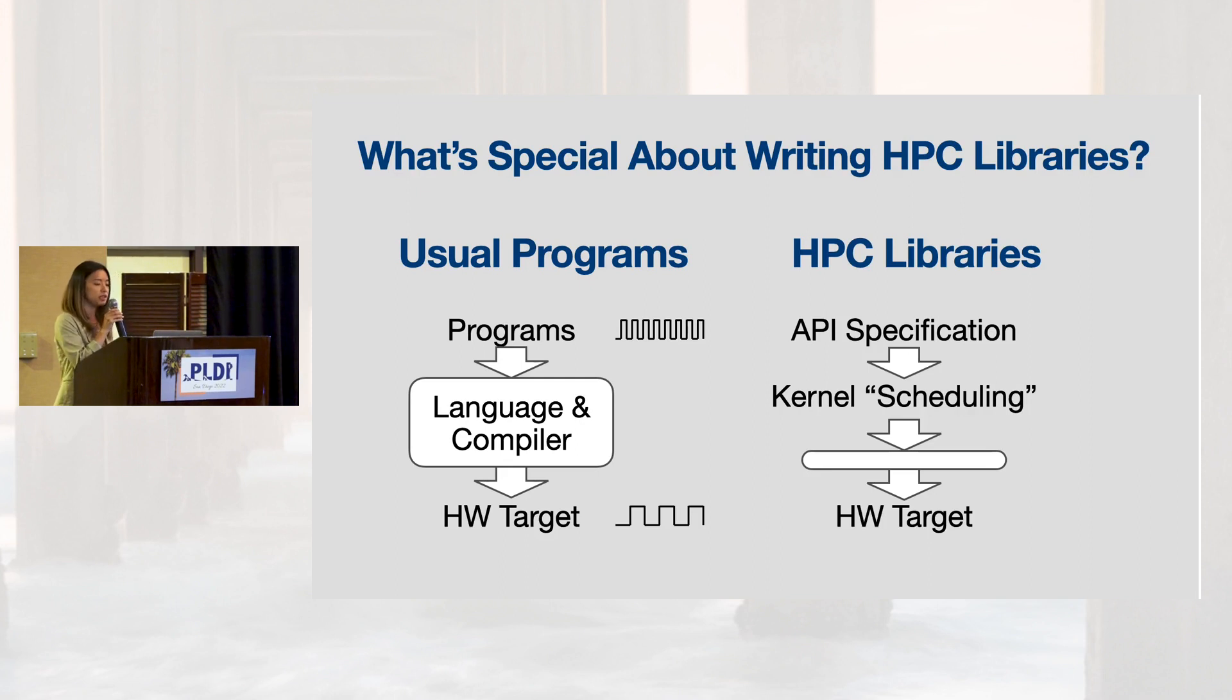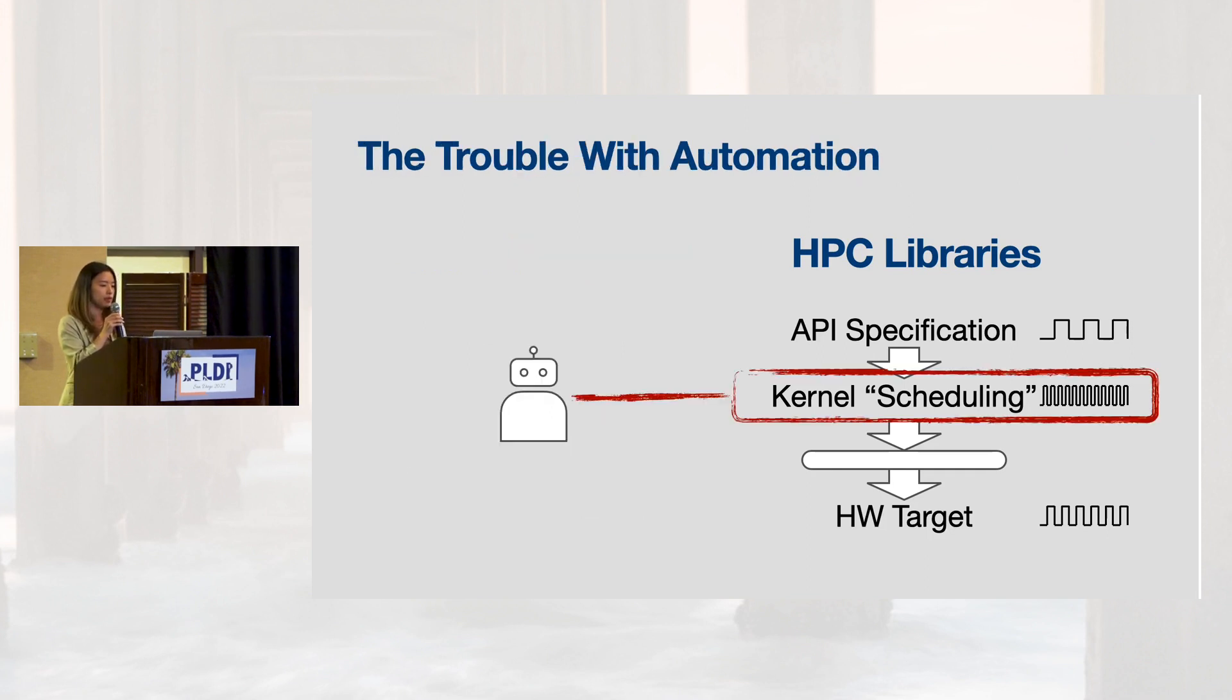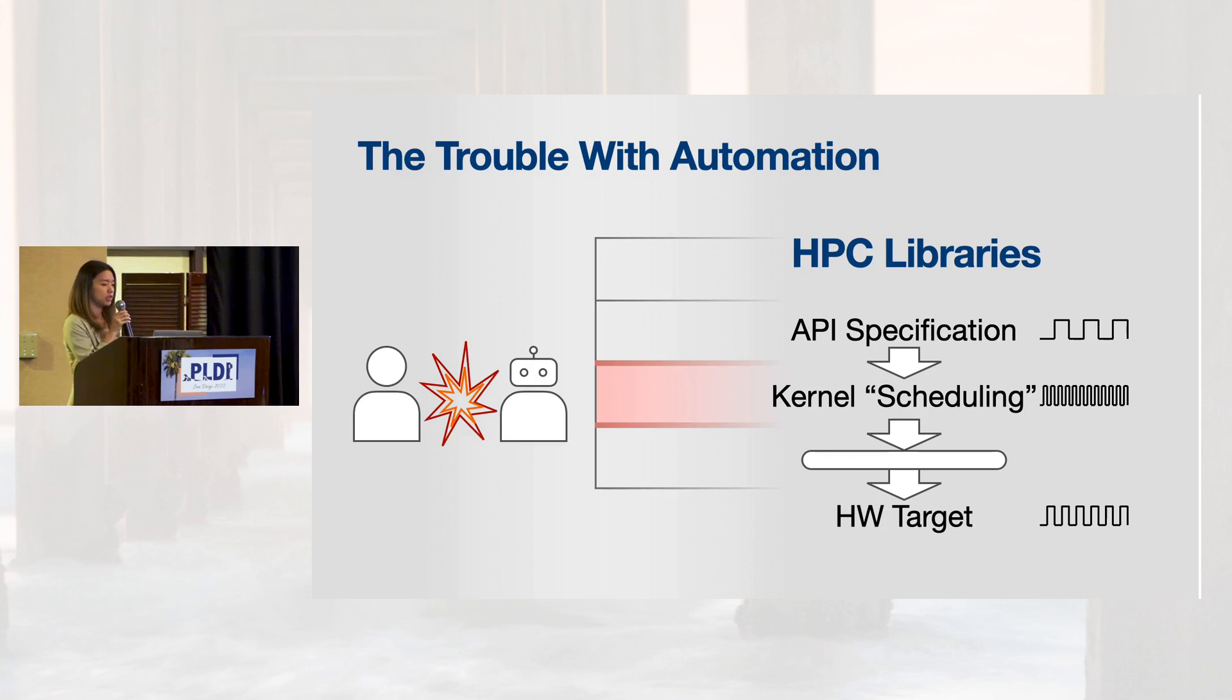The situation for HPC libraries is reversed. The specification of what programs should do, for example BLAS or convolution, changes least frequently, even as hardware keeps getting updated. And even more frequently, performance engineers must constantly experiment with different ways of computing the same thing to find optimization opportunities. The main approach in research has been to try to automate this optimization process. But full automation would prevent performance engineers from doing their job, instead delegating it to compiler writers. This is usually a losing cost-benefit proposition because even modest gains in efficiency save millions of dollars at scale.